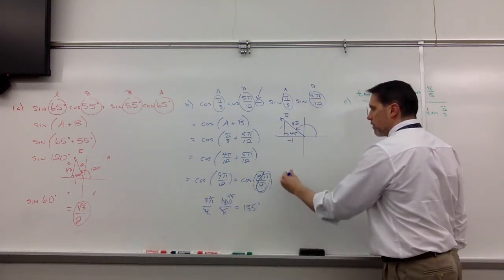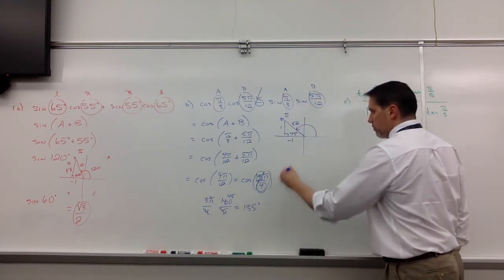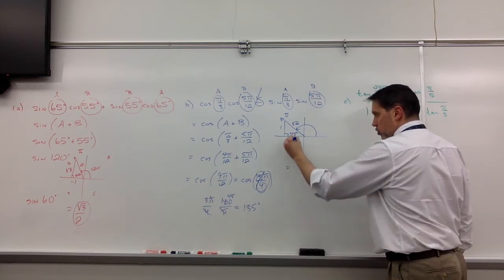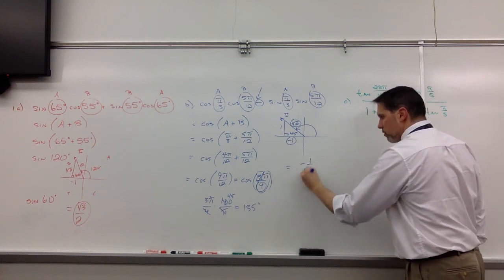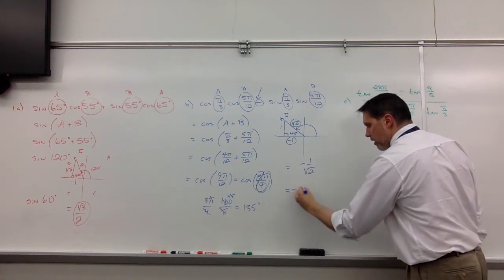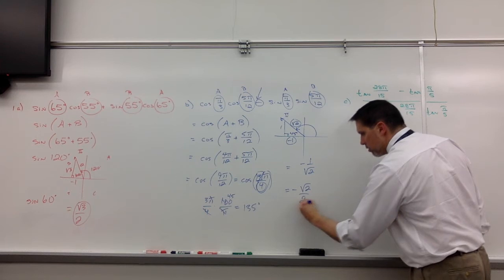So cosine of 135, we'd be looking at adjacent over hypotenuse, negative 1 over the square root of 2, or rationalize, negative square root of 2 over 2.